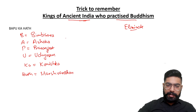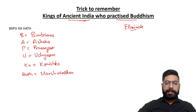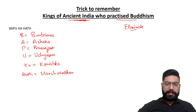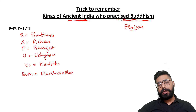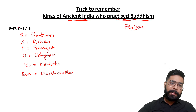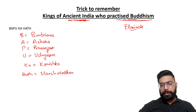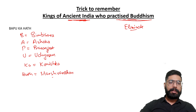So this is a small trick to remember which ancient India kings practiced Buddhism. So: Bimbisara, Ashoka, Prasanjit, Udhya Sen, Kanishka, and Harsh Vardhan.